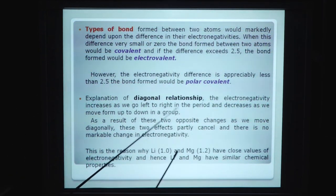Explanation of diagonal relationship. The electronegativity increases as we go left to right in the period and decreases as we move from up to down in a group. As a result, these two opposite changes as we move diagonally, these two effects partially cancel. There is no remarkable change in electronegativity. This is the reason why lithium 1.0 and magnesium 1.2 have close values of electronegativity. Hence, lithium and magnesium have similar chemical properties.